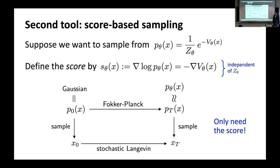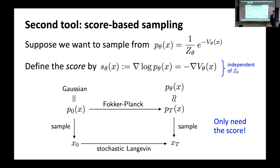One reason why score-based sampling is useful is that in more naive formulations, you might be forced to estimate Z_theta — the normalization of your probability distribution — which can be very costly and complicated. But if you only know the gradient of the term inside the exponential, that suffices for purposes of doing efficient sampling.